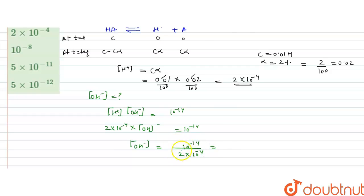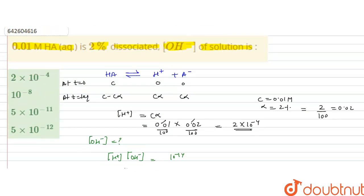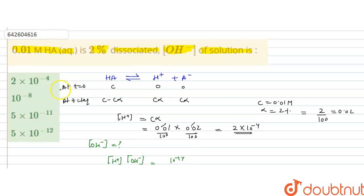So that will be 1 by 2 that is 0.5 into 10 raised to the power minus 14. When this will go in numerator, it will become power positive. So this gives us 0.5 into 10 raised to the power minus 10. Now this 0.5 can be written as 5 into 10 raised to the power minus 11. So this is the OH minus concentration in the acidic solution, 5 into 10 raised to the power minus 11. So C is the correct answer to this question.